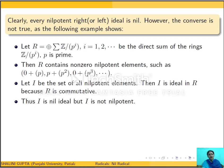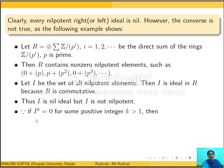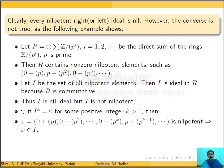Since I is the set of all nilpotent elements, every element of I is nilpotent, so I is a nil ideal. But suppose I^k = 0 for some positive integer k. This means every k-th power of an element of I should be 0. However, consider the element (0, p, p^2, ..., p^k, p^{k+1}, ...). The k-th power of this element is 0 in the first k components, but in the (k+1)-th component it equals p^{k+1}, which is not 0. So there is an element x in I whose k-th power is not 0, meaning I^k ≠ 0. Thus I is not nilpotent, so every nil ideal need not be nilpotent.